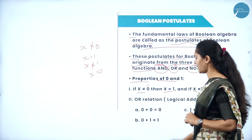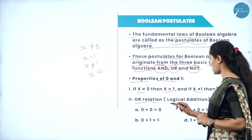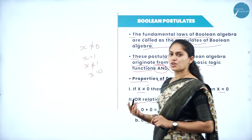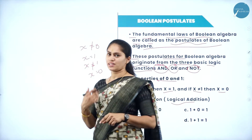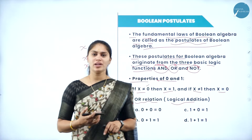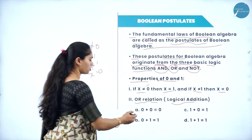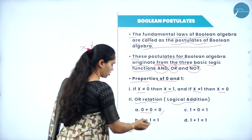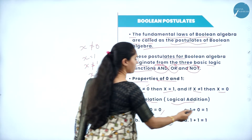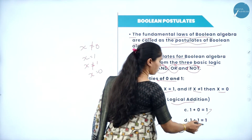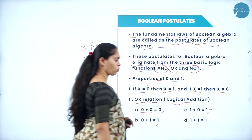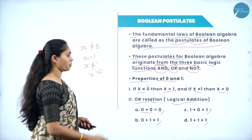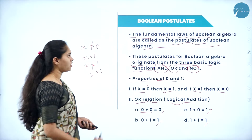The second type is OR relation, that is logical addition. We have already learned addition with respect to the Boolean truth table. The results are: 0 plus 0 is 0, 0 plus 1 is 1, 1 plus 0 is 1, and 1 plus 1 is 1. That is the OR relation, OR operation, or logical addition.